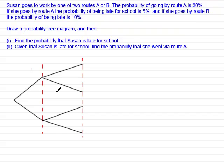So I've divided this up into two sections, two trials as we call it. The first trial is about which route that Susan takes to go by school, and the second trial will be about whether she's late or not. So we're going to give some labels to each of these trials.